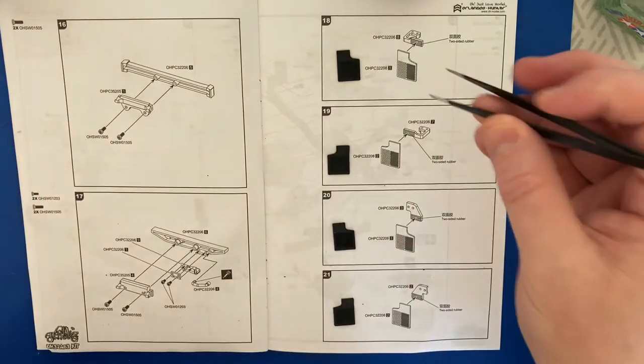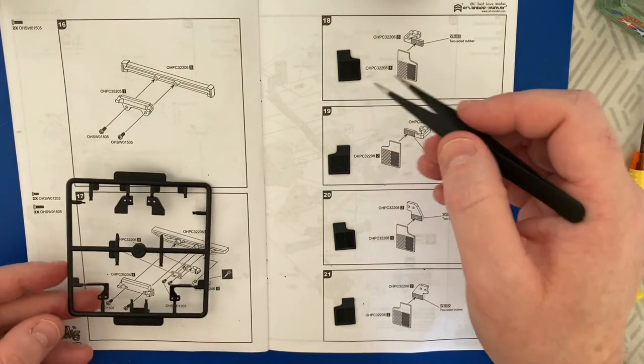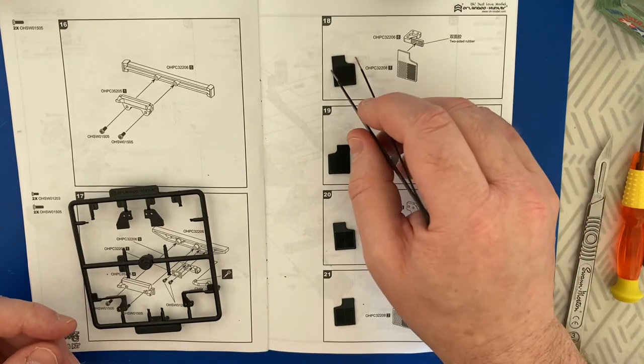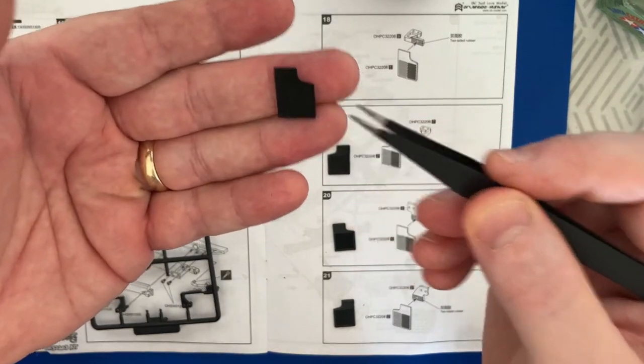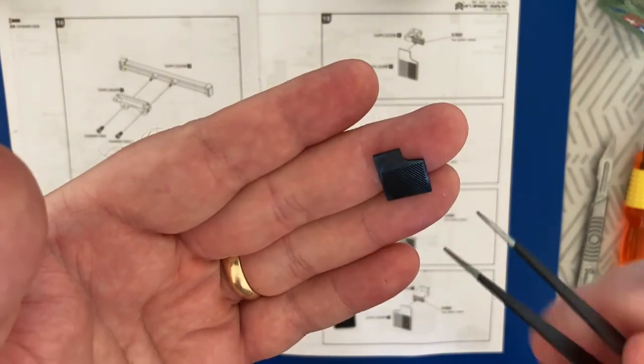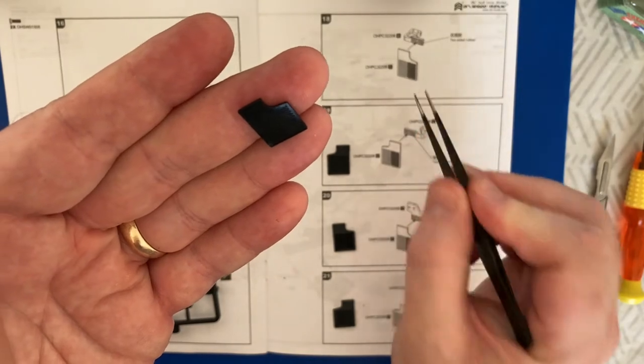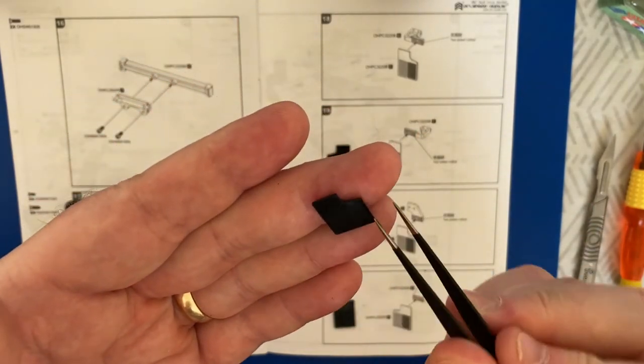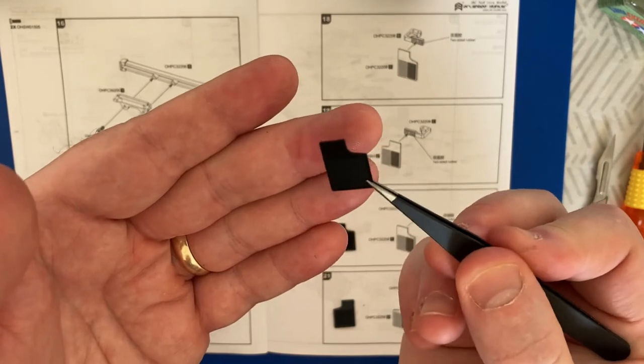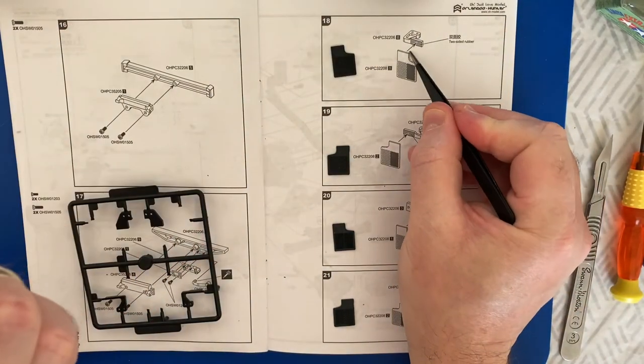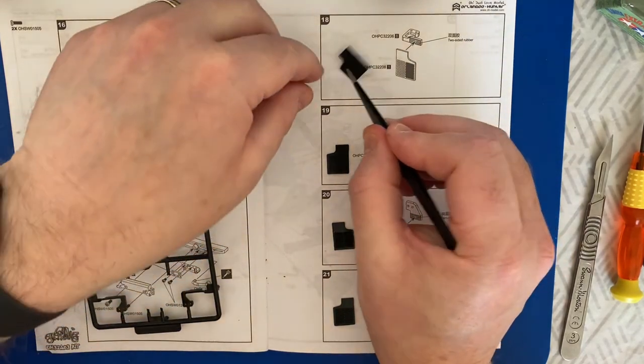So steps 18, 19, 20, and 21 are for the mud flaps. And in parts bag C you have these wonderful rubber mud flaps. And I'm not sure whether the camera is going to be able to pick this up. But on one side of the rubber you've got a pattern as indicated in the drawing. It's like a pattern on one side. And on the other side it's completely plain. So you've got two of each kind. So you've got the drawing to refer them to. As you can see from there.